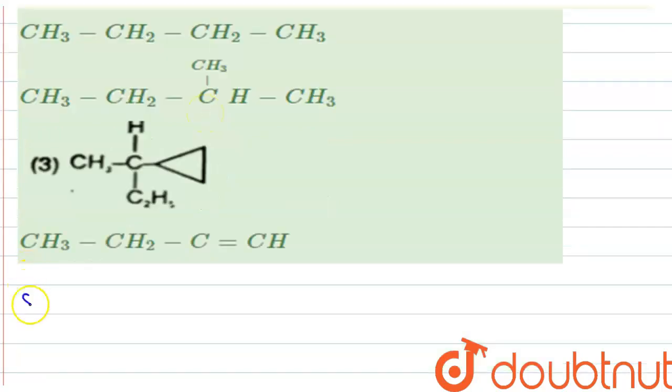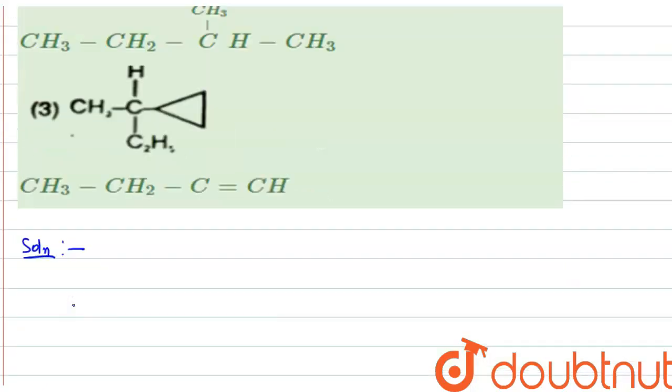So the optically active alkane contains a chiral carbon. That chiral carbon is a carbon which is attached to four different groups.